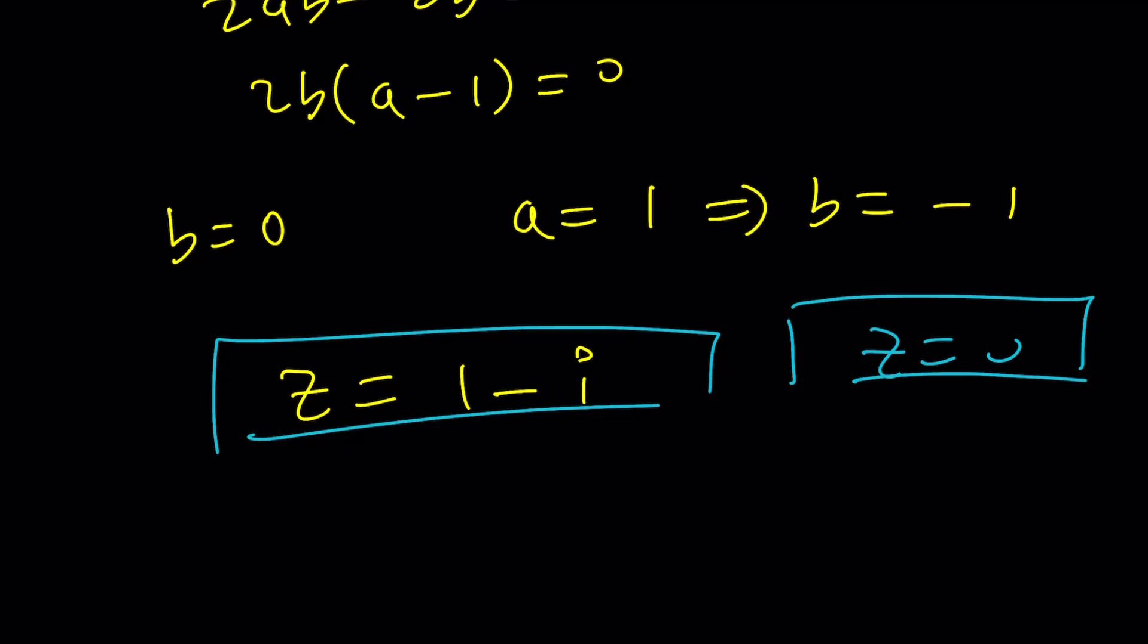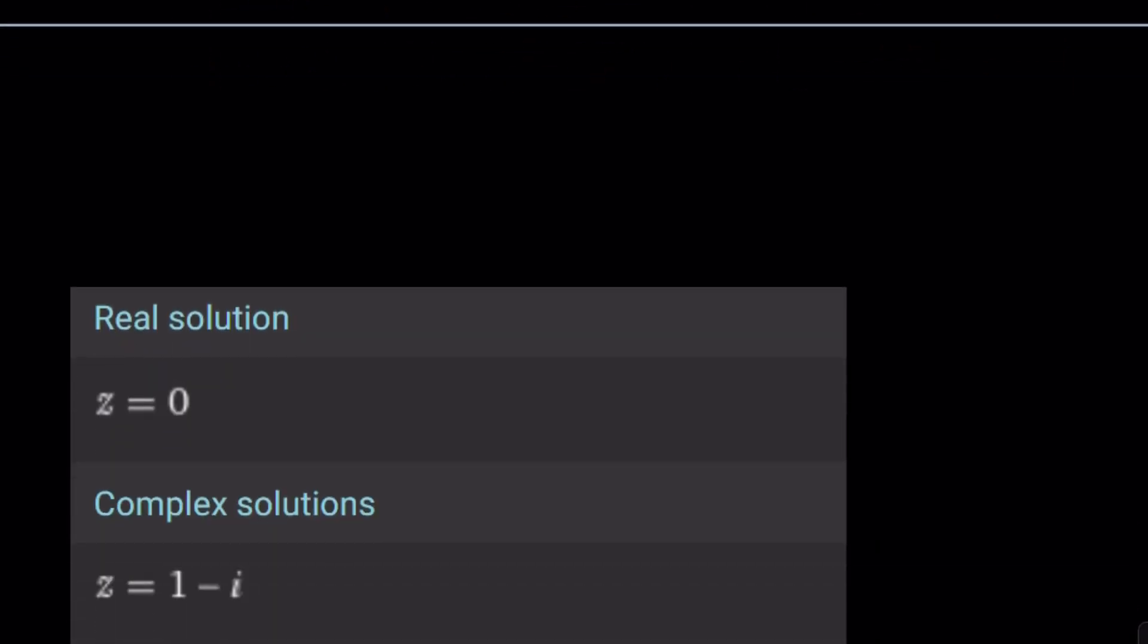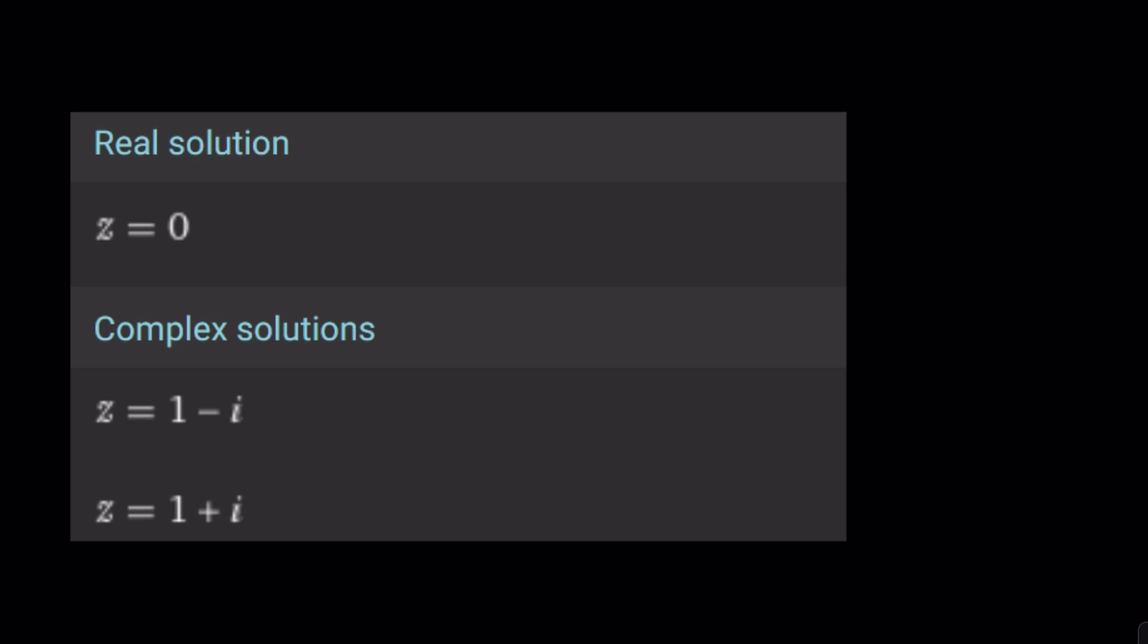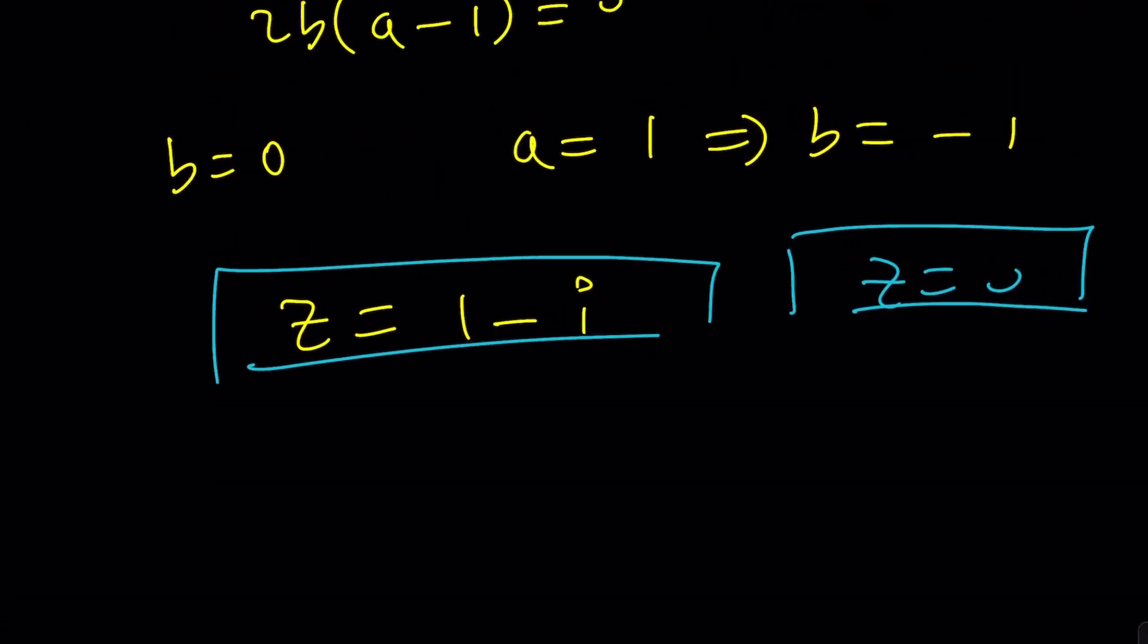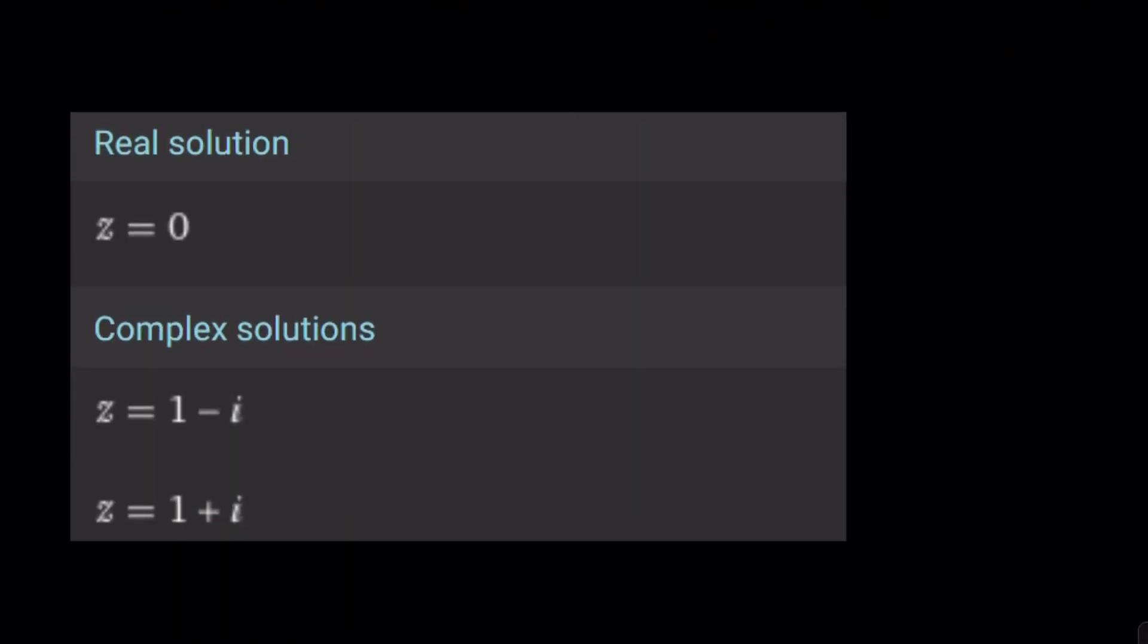But let's go ahead and check out Wolfram Alpha. Uh-oh. I wasn't expecting 1 plus i. Why does this work? Because if z works, z bar also works because it's symmetrical in z and z bar. But why didn't we get that from here? That's a good question. That's for you to find out.